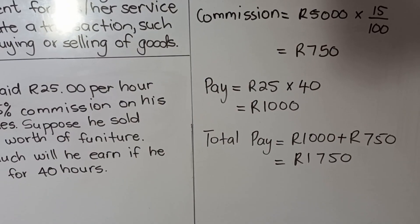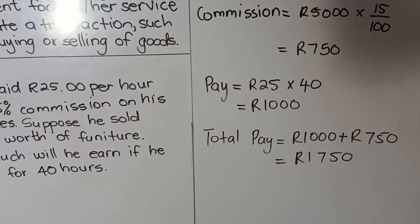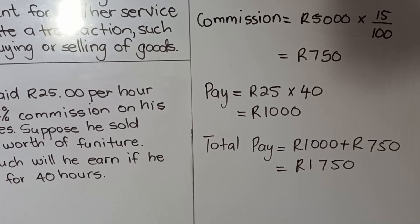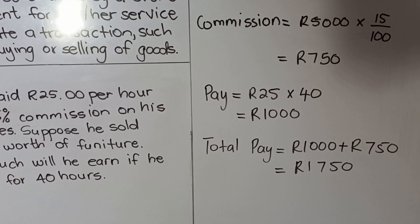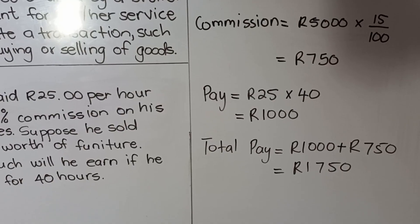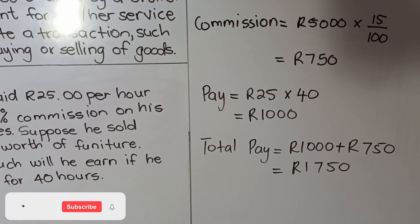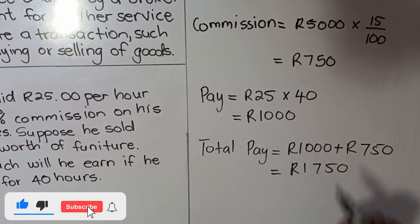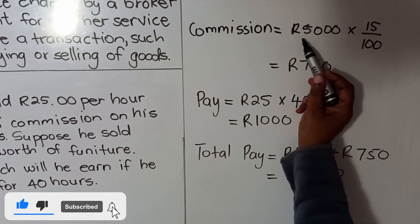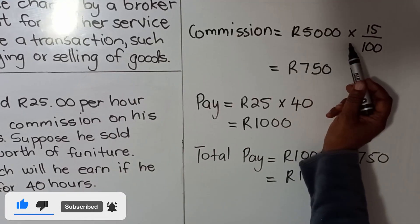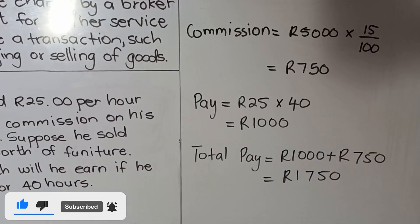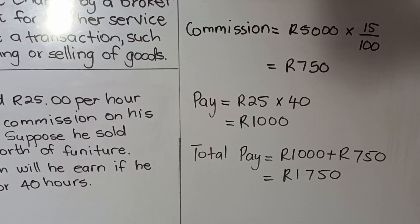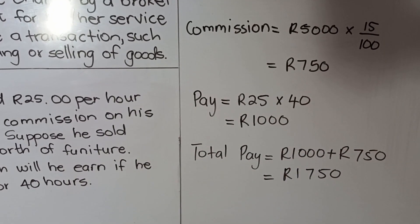Commission is usually calculated as a percentage. You need to know that a percentage is always the given number over 100. So you say the percentage over 100 and multiply by whatever amount they've given you — like here, 5,000 times 15%. This is how you calculate commission. This is the end of our lesson, thank you.